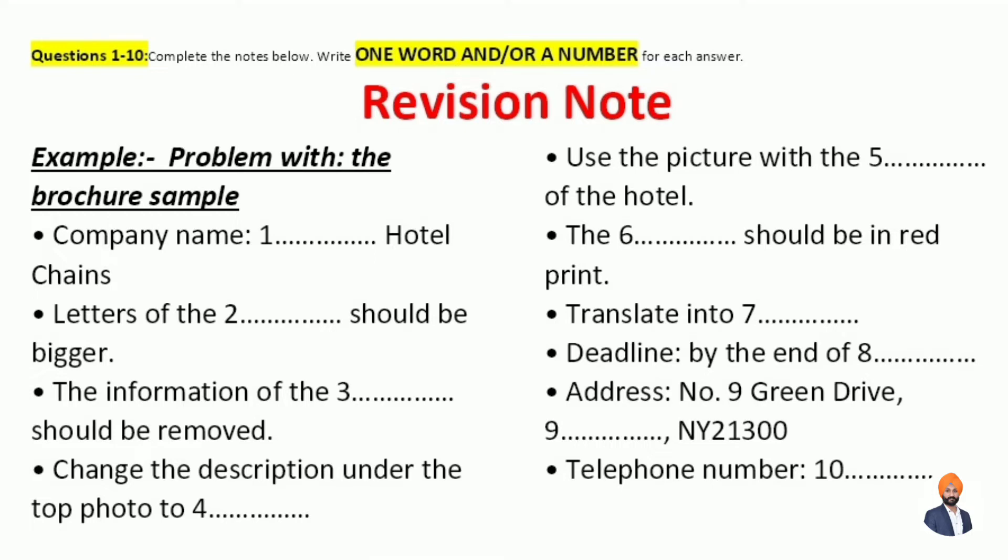Just a minute. Let me take notes of your requirements. What else needs changing? The information regarding the pool should be deleted, because it is currently under renovation and is not available. So all of the relevant descriptions on page two should be removed. What do we replace it with? We can't just leave the whole page blank. Just fill it in with the introduction of our newly opened gym. I've included all the relevant information here in this flash drive.